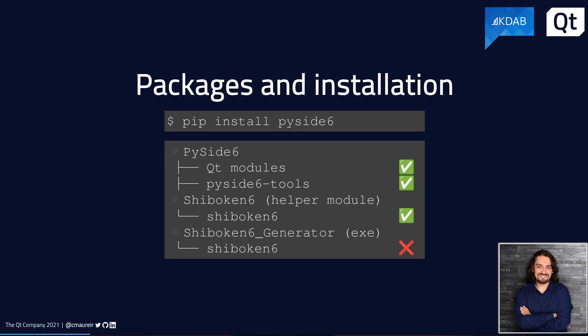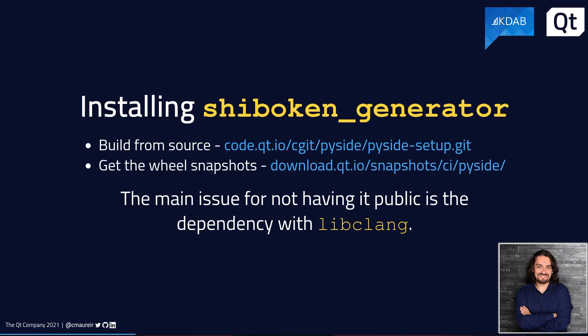To install PySide, you can run the following command: pip install PySide6 for the latest. This would automatically install the dependencies of the Shiboken module, as you can see on the diagram, but not the generator. If you are interested in installing the Shiboken generator, you can either build it from source or get some Python package snapshots from our CI that you can easily configure and start using. The main reason it is not publicly published is because there is a hard dependency on libclang.